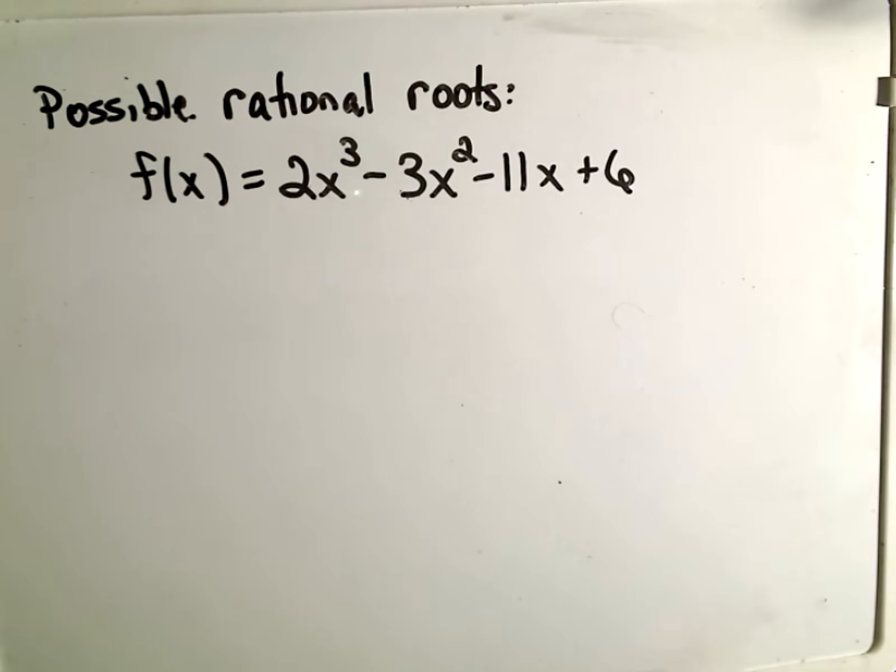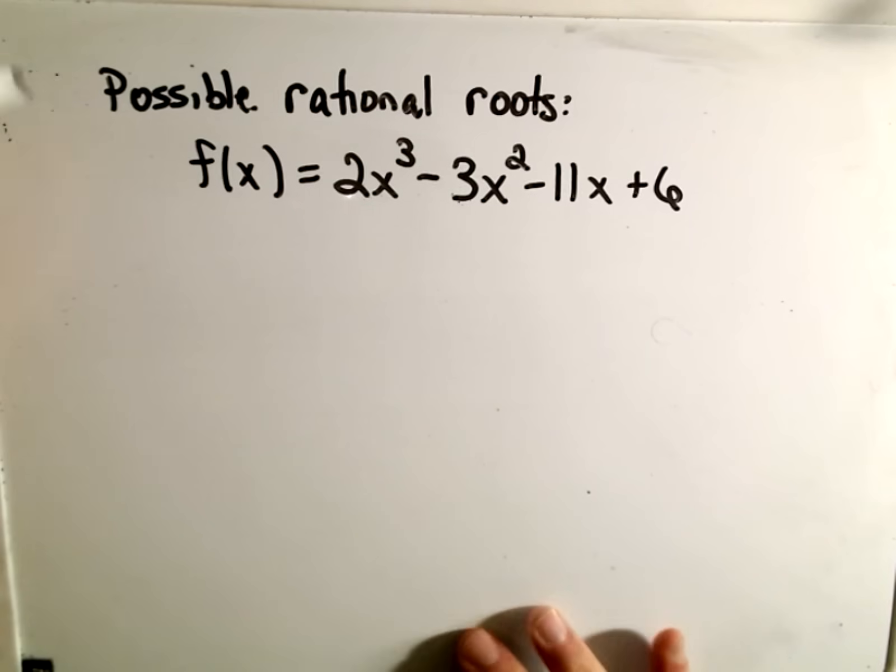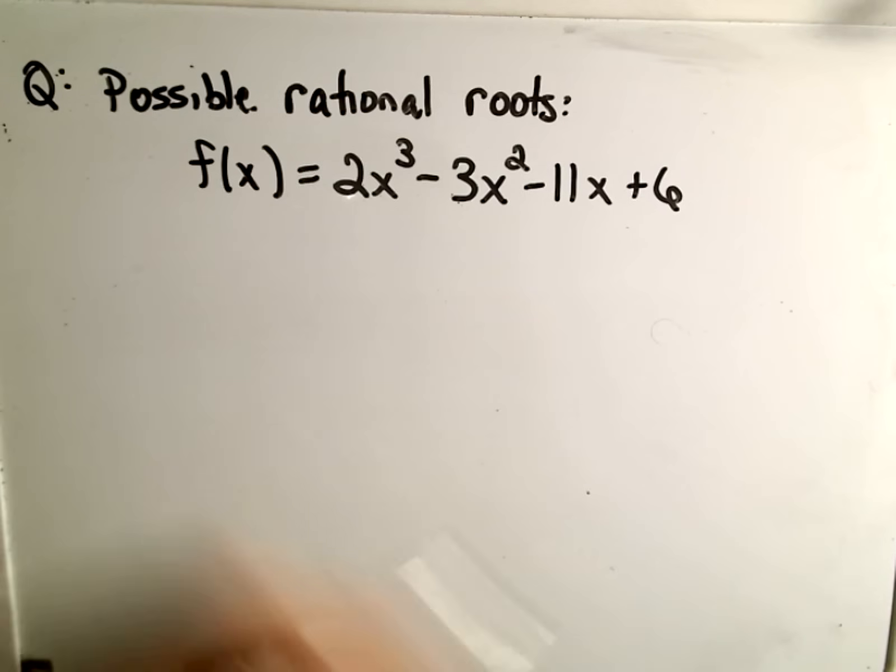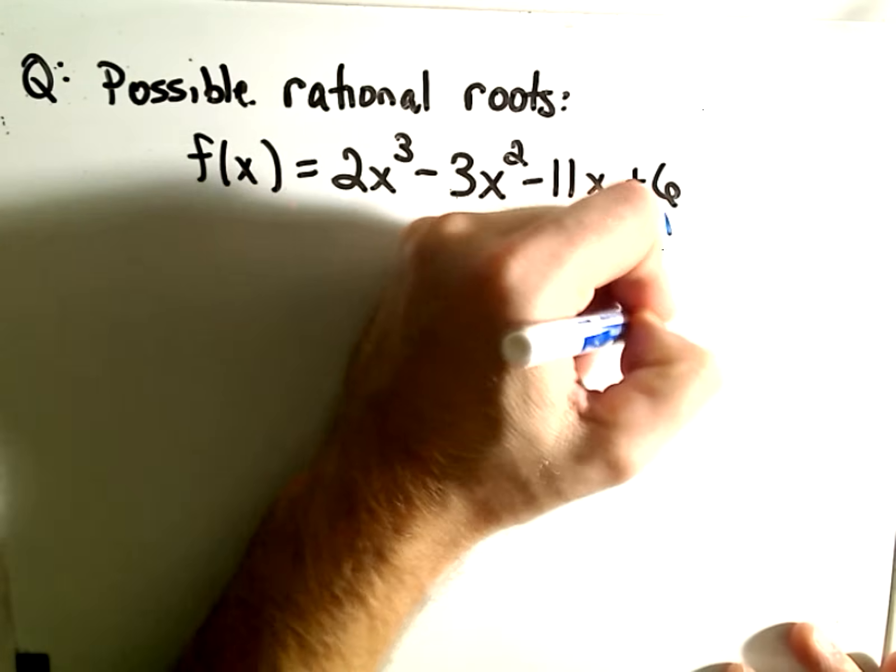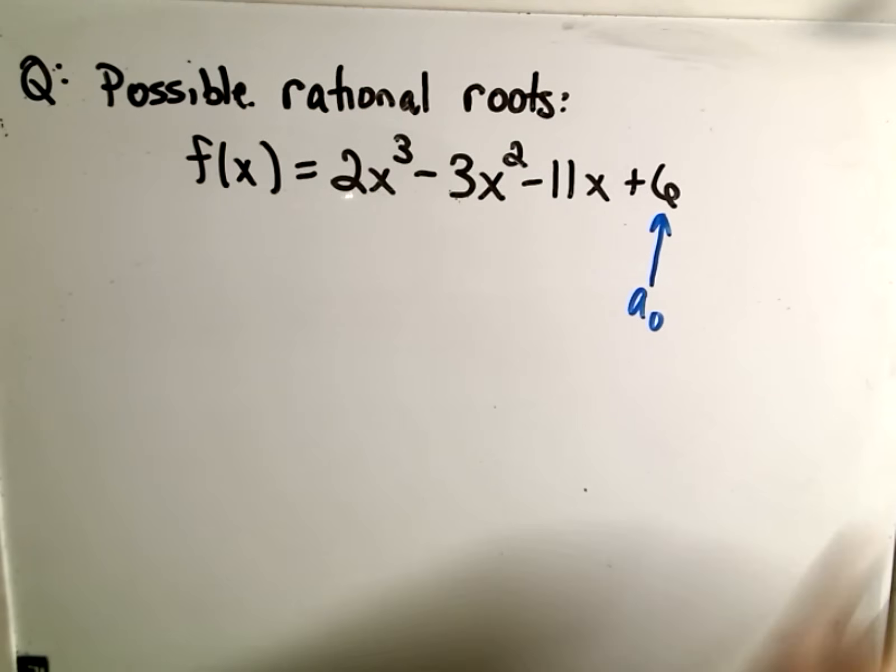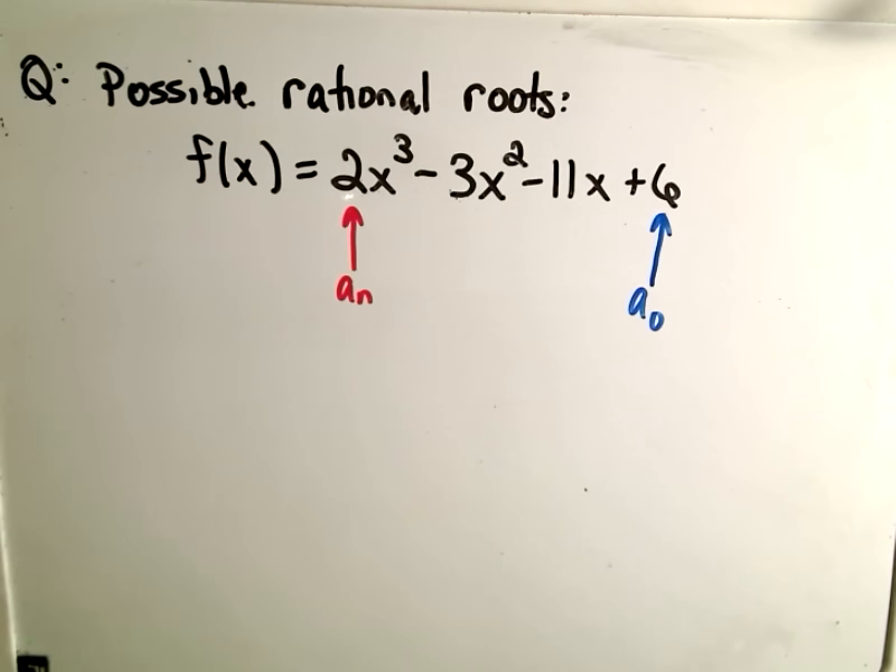I think it's best illustrated with an example. So the question is, what are the possible rational roots of this polynomial: 2x³ - 3x² - 11x + 6. Basically, it says what you do is you look at the factors of the constant a₀, and then we look at factors of the leading coefficient, so that's our aₙ.